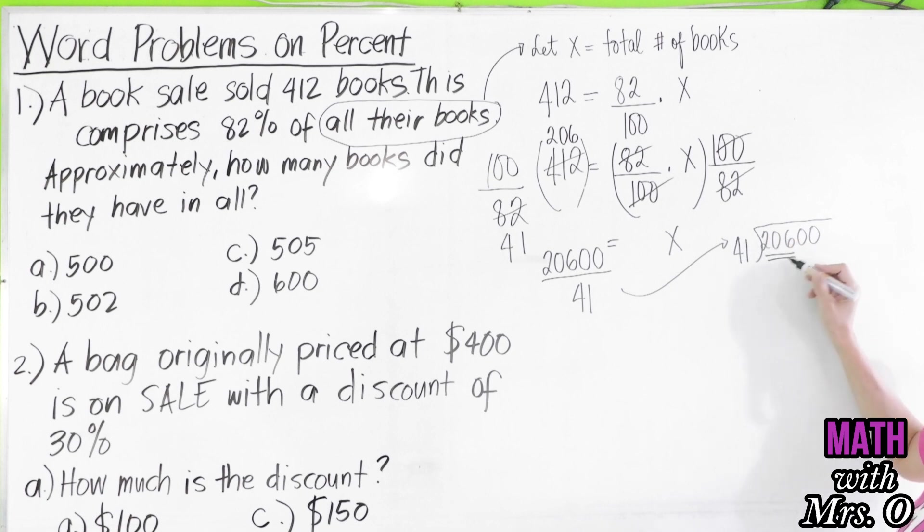We get 206 divided by 41. That is approximately 5. 5 times 1 is 5. 5 times 4 is 20. Subtract. 6 minus 5 is 1. This is now zero. Bring down 10. 10 divided by 41 cannot be, so you have zero there. Bring down 100 again. 100 divided by 41 is 2. 2 times 1 is 2. 2 times 4 is 8. You have 82. 100 minus 82 is 8. But this is 10 minus 2 is 8. Rather, 9 minus 8 is 1. That's 18.